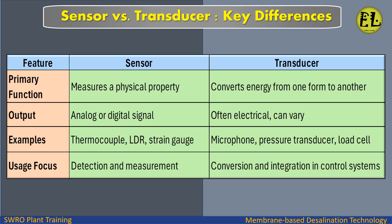Key differences: Primary function — sensors measure a physical property; transducers convert energy from one form to another. Output — sensors produce an analog or digital signal; transducer output can vary, often electrical. Examples of sensors: thermocouple, LDR, strain gauge, microphone. Examples of transducers: pressure transducer, load cell. Usage — sensors focus on detection and measurement; transducers handle conversion and integration in control systems.